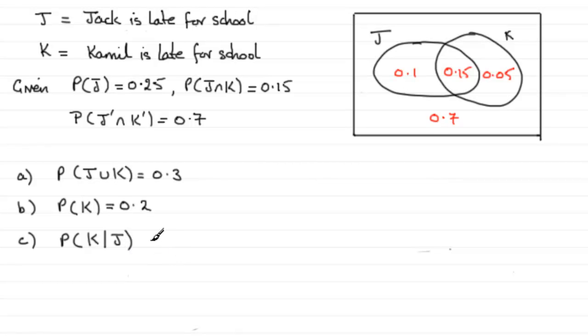And to do something like this, especially when it comes from a Venn diagram, we can see that we know Jack is late for school. So we know it's this probability within here, 0.1 and the 0.15, a total of 0.25.